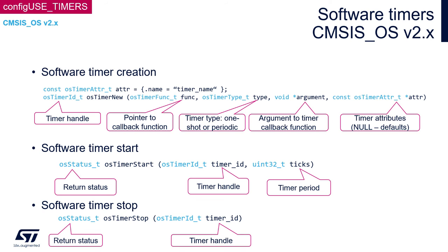To start the software timer, call osTimerStart. It requires two arguments: the timer handle, and the timer period given in ticks — typically one millisecond. It returns an osStatus_t value: 0 means successful execution and any negative value means an error. To stop the timer, call osTimerStop. It requires only one argument — the software timer handle — and also returns an osStatus_t value. Please refer to the osStatus_t description for more details; this topic was covered within the CMSIS OS API description.